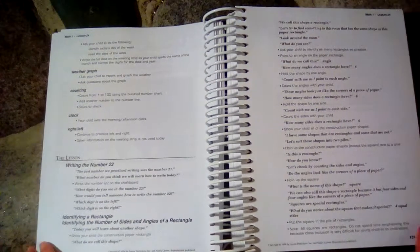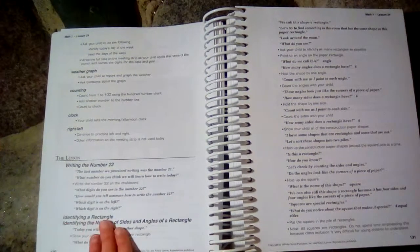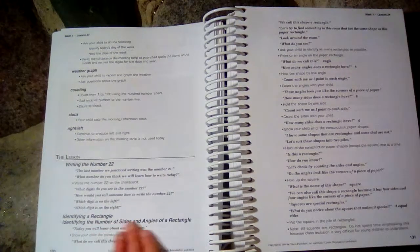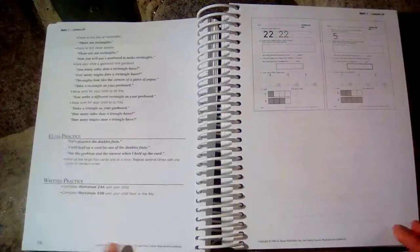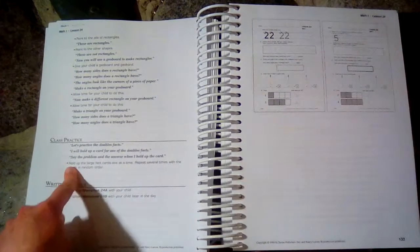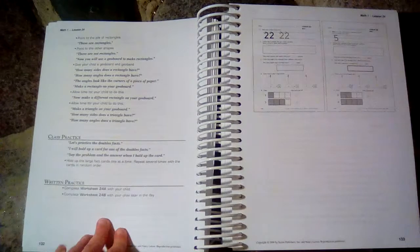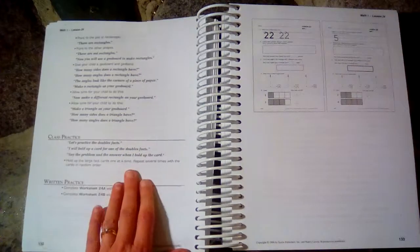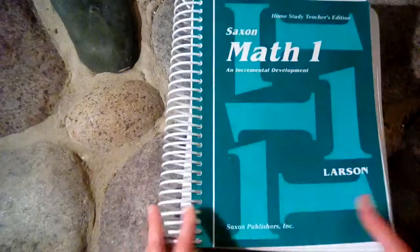So the actual lesson starts here. So this lesson is identifying a rectangle and identifying number of sides and angles of a rectangle, and it is all scripted. And after you've taught the new concept, then there is some math fact practice. So you'd use your flashcards here. And also usually there is a fact worksheet in the workbook. So let's take a look at the workbook.